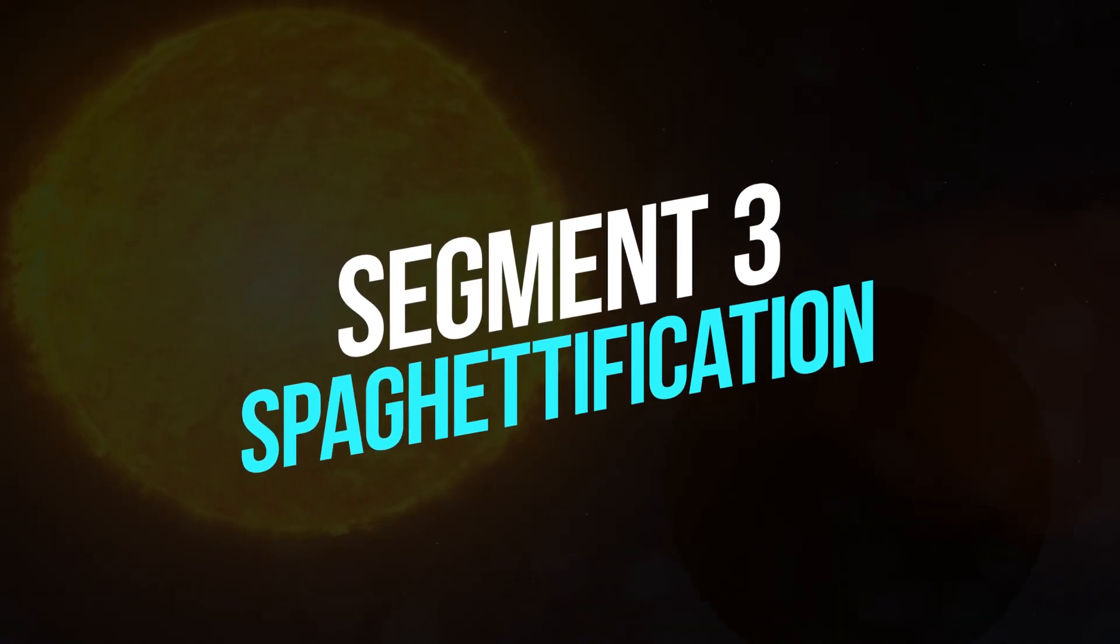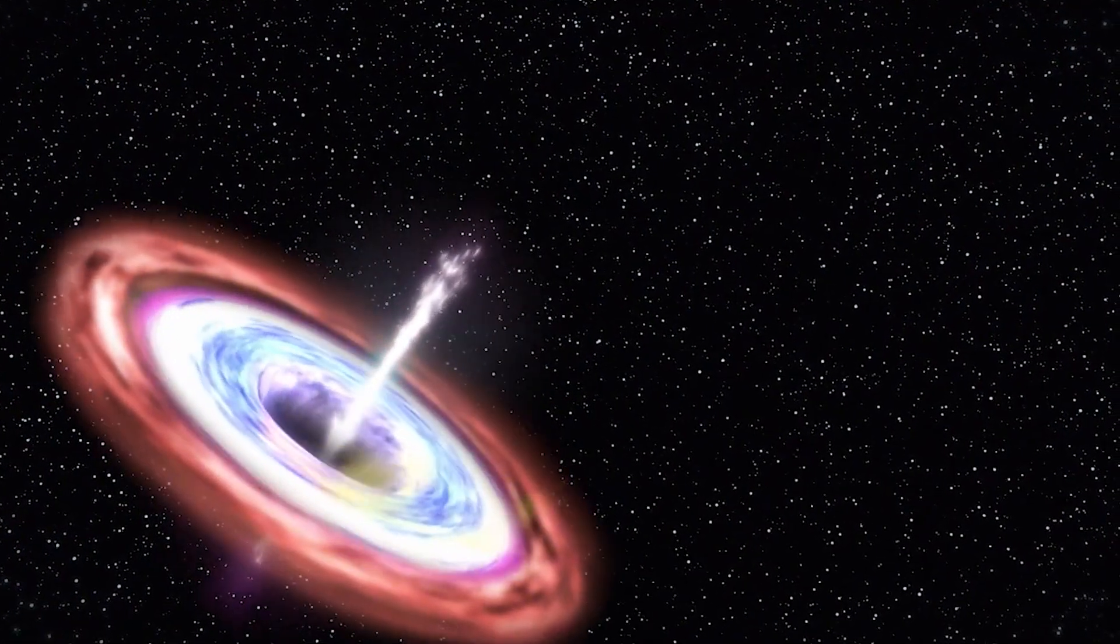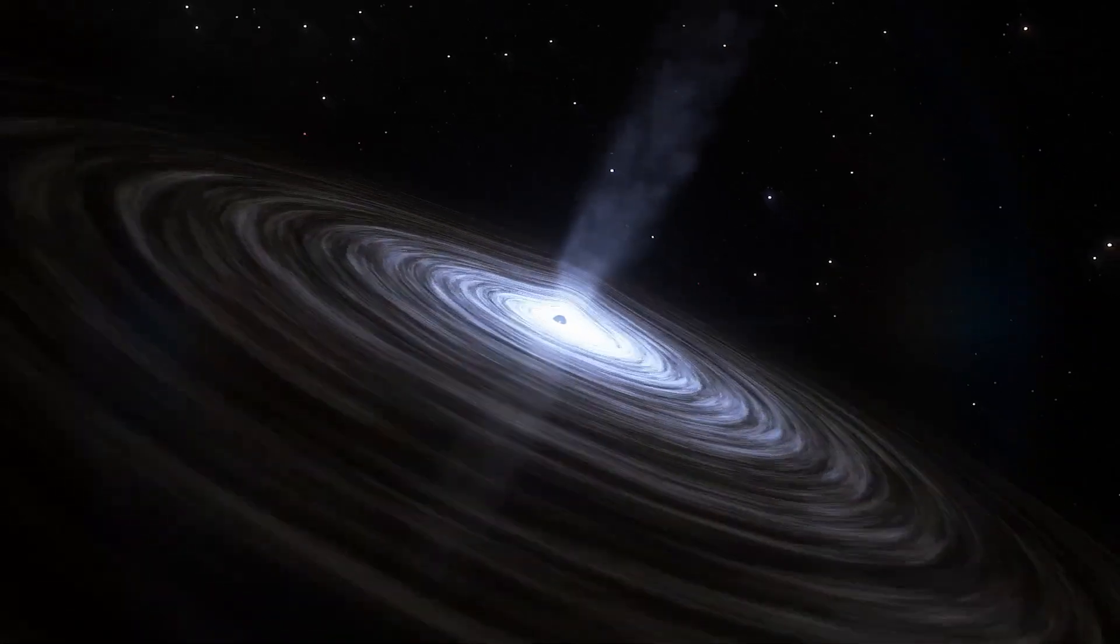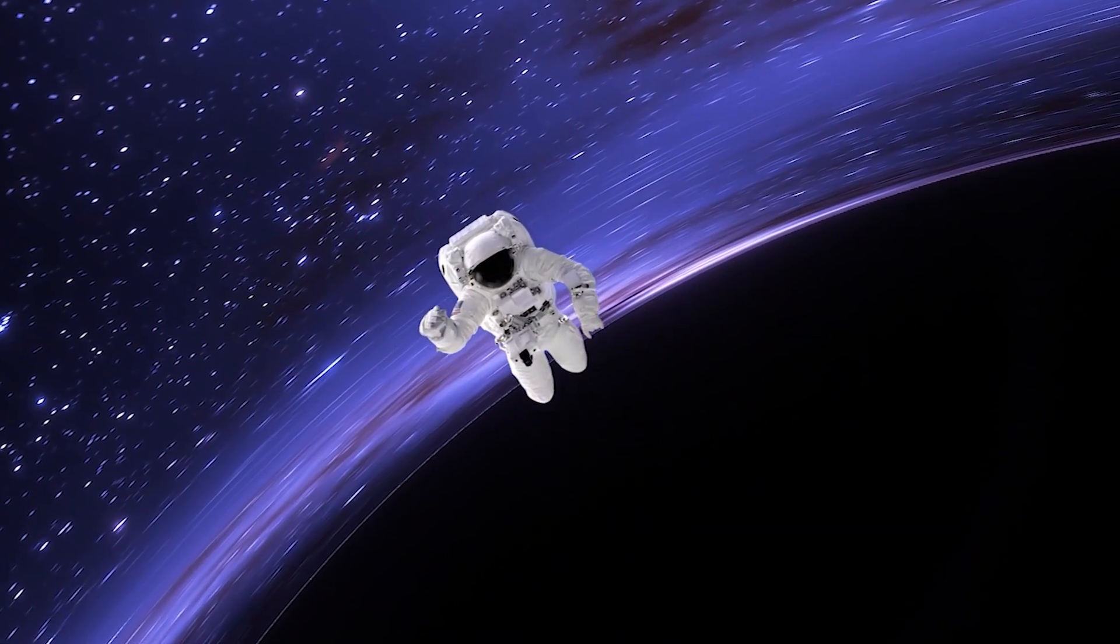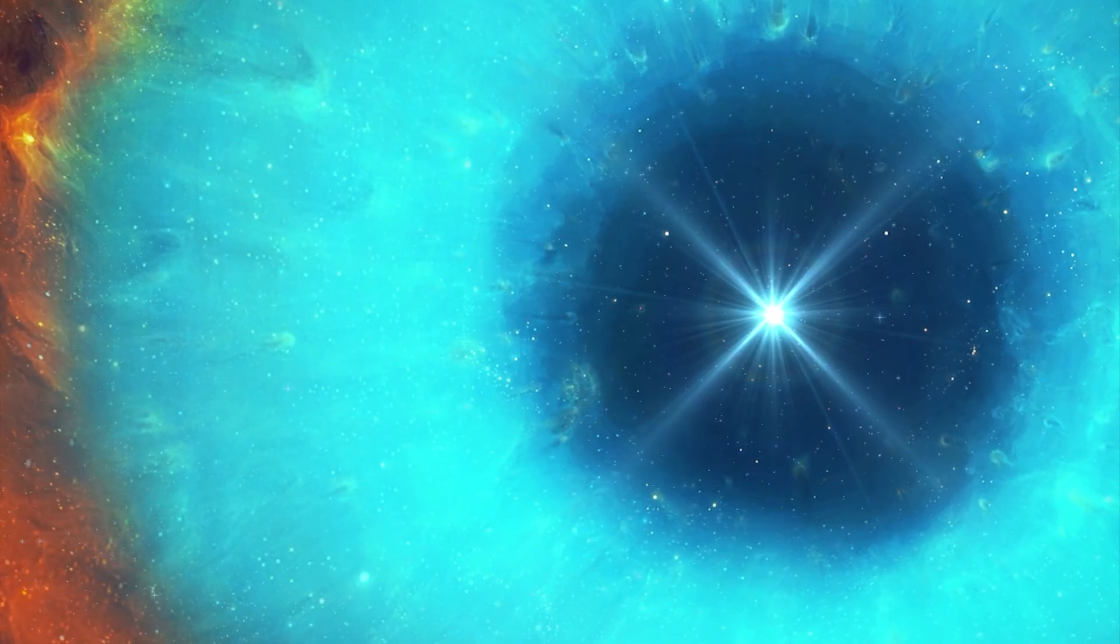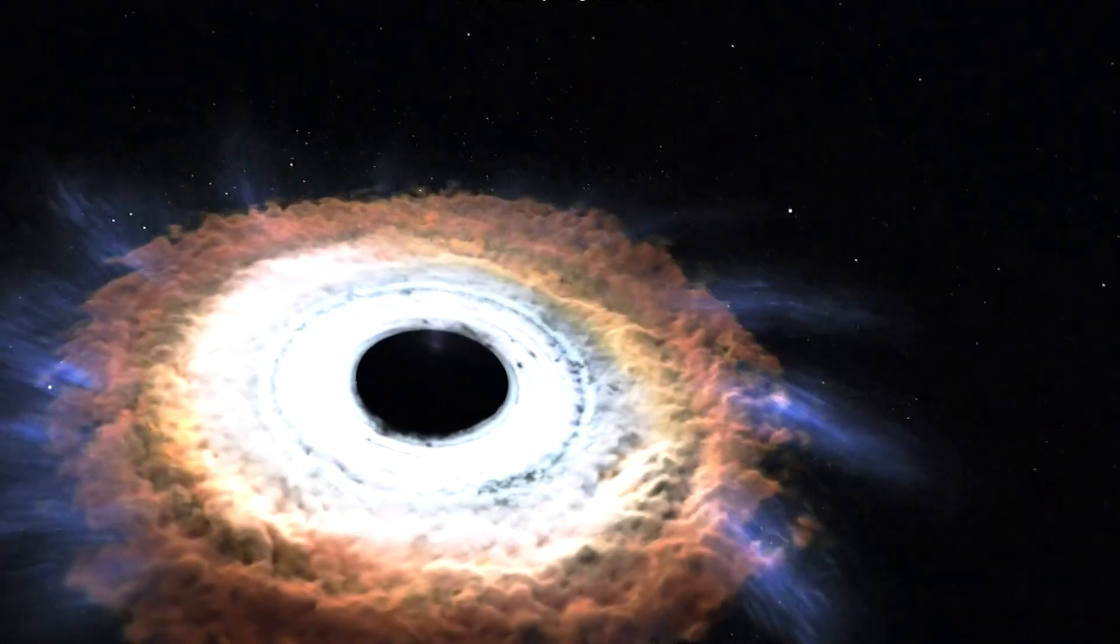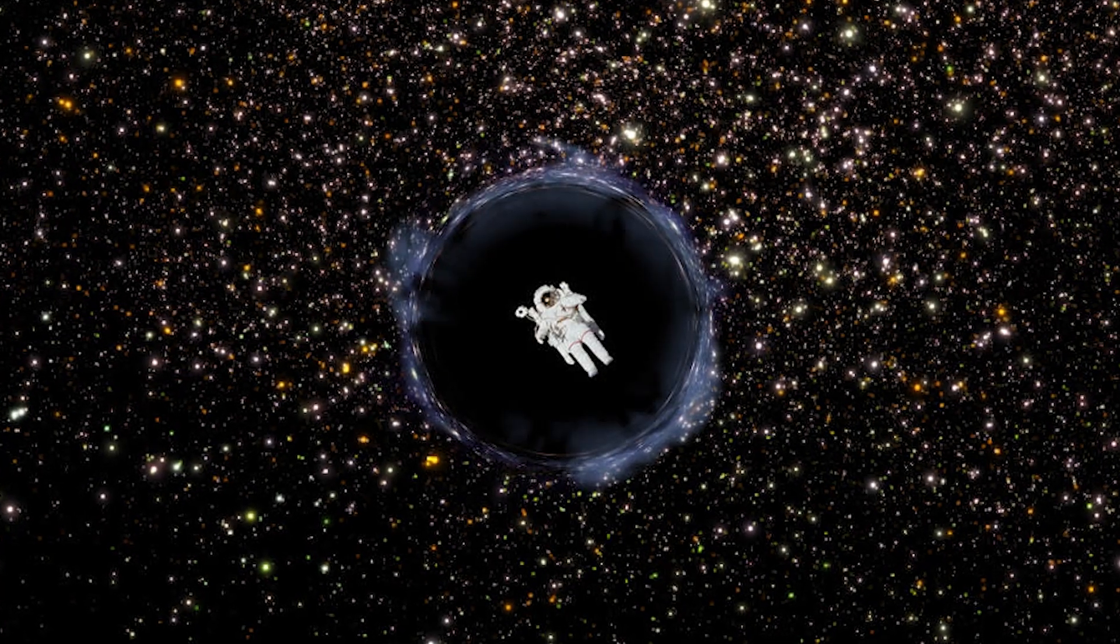Segment 3. Spaghettification. Approach a black hole and something truly bizarre happens. Spaghettification. As you near the event horizon, the difference in gravitational force between your head and feet becomes extreme. You'll be stretched out into a long, thin shape, much like spaghetti. It's a gruesome fate for any unfortunate object or astronaut.